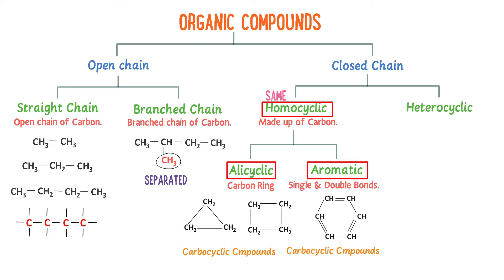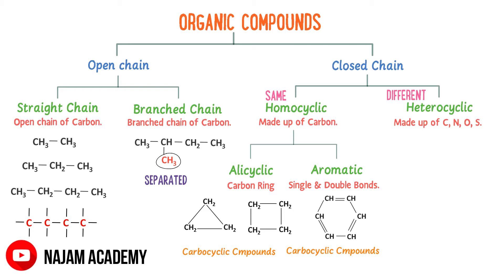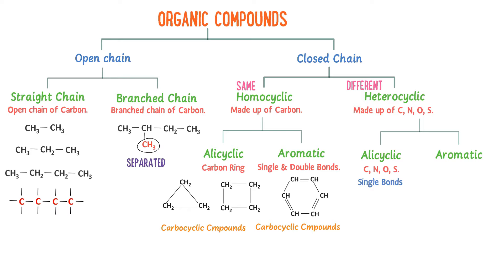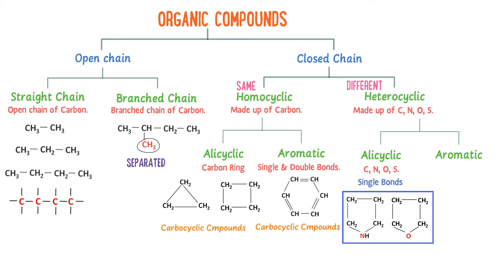Now, what about heterocyclic organic compounds? The word hetero means different, so heterocyclic are those organic compounds whose ring is made up of one or more atoms like nitrogen, oxygen, or sulfur. Heterocyclic organic compounds are further divided into alicyclic and aromatic. Alicyclic heterocyclic compounds contain one or more atoms like nitrogen, oxygen, or sulfur in their ring but have single bonds. For example, tetrahydropyrrole and tetrahydrofuran. These rings contain either nitrogen, oxygen, or sulfur atoms but all have single bonds.